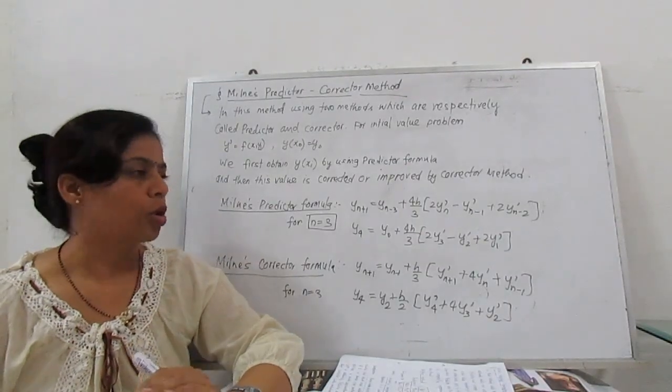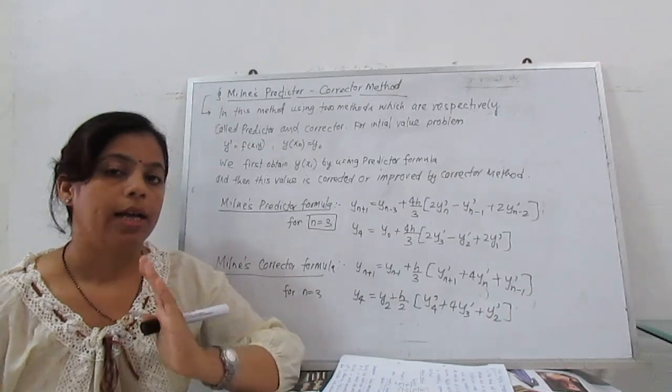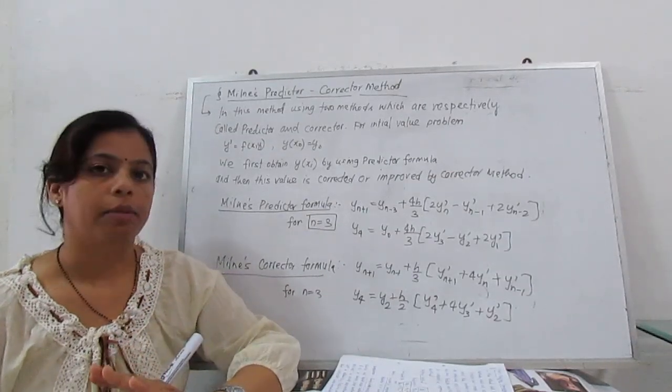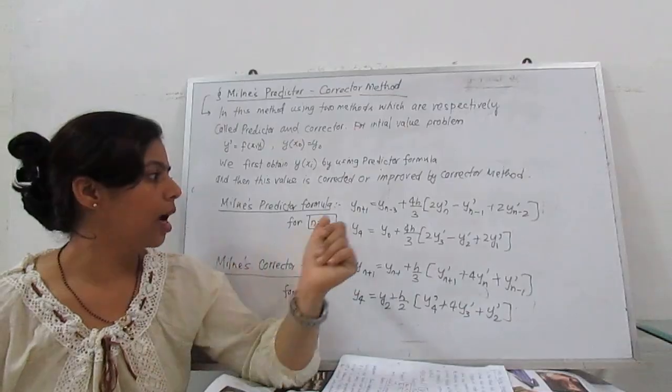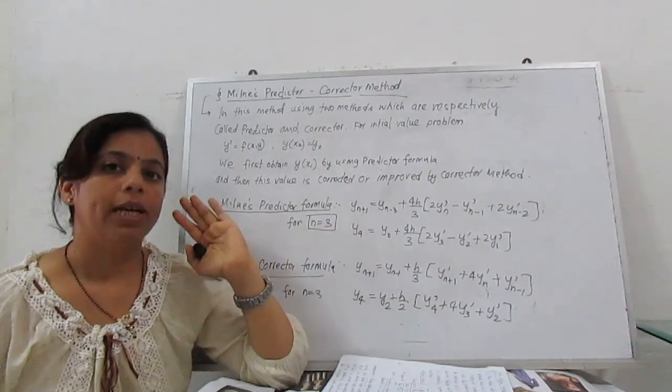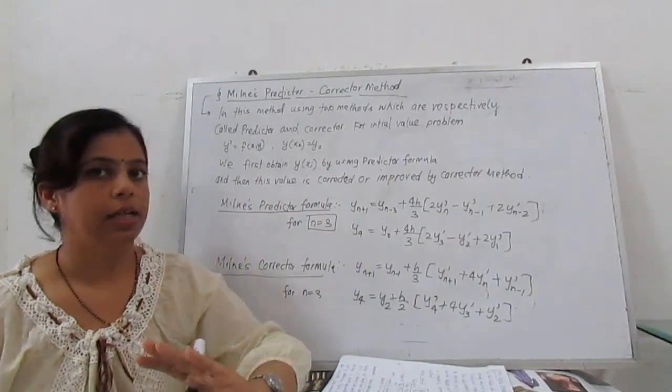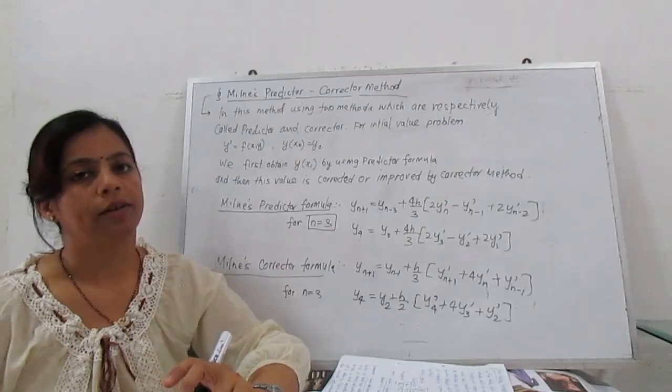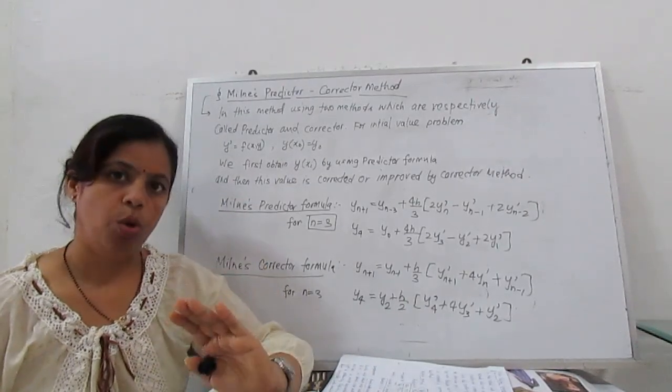In Runge-Kutta method and Milne's predictor and corrector method, both are level 4 formulas. It means we start with y₄, but in Runge-Kutta method we need only one initial value, that is x₀ and y₀.